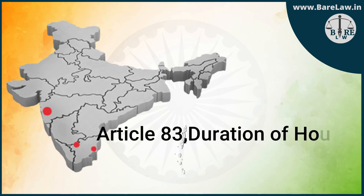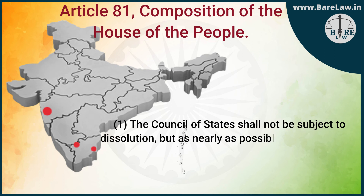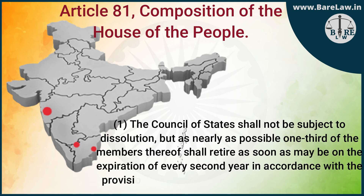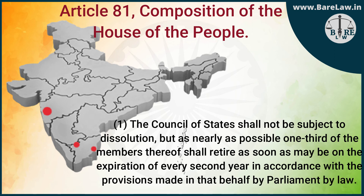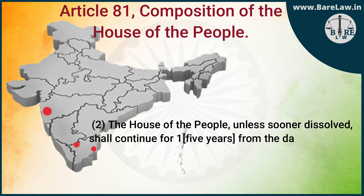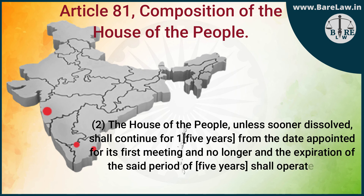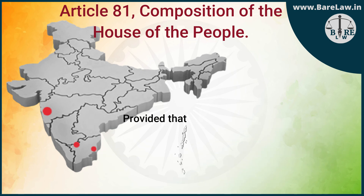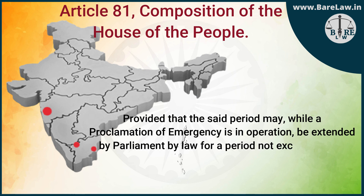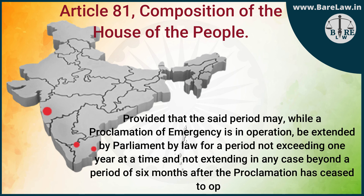Article 83: Duration of Houses of Parliament. Sub-Clause (1): The Council of States shall not be subject to dissolution, but as nearly as possible one-third of the members thereof shall retire as soon as may be on the expiration of every second year in accordance with the provisions made in that behalf by Parliament by law. Sub-Clause (2): The House of the People, unless sooner dissolved, shall continue for five years from the date appointed for its first meeting and no longer; the expiration of the said period of five years shall operate as a dissolution of the House; provided that the said period may, while a proclamation of emergency is in operation, be extended by Parliament by law for a period not exceeding one year at a time and not extending in any case beyond a period of six months after the proclamation has ceased to operate.